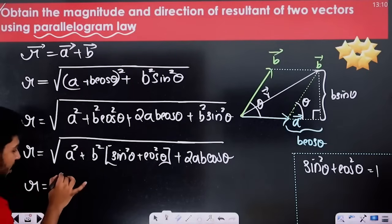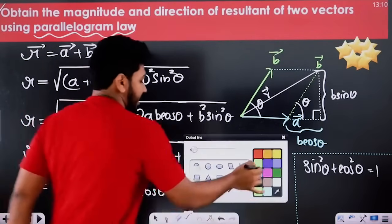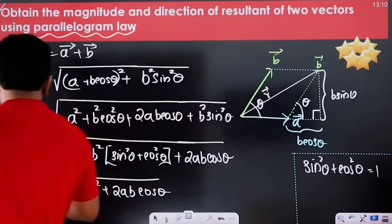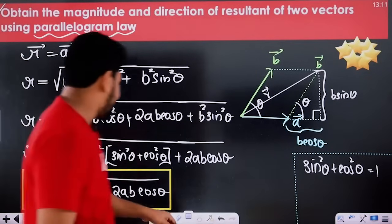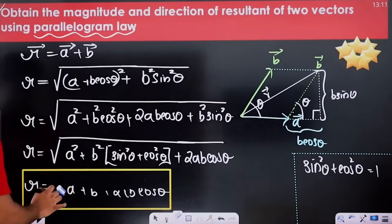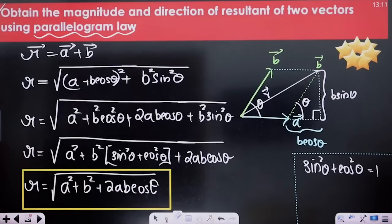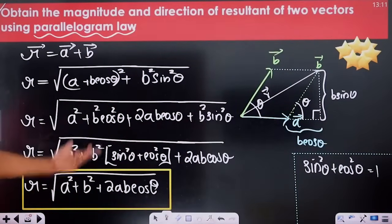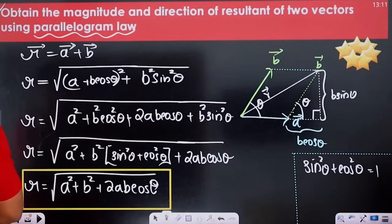So R is equal to root of A squared plus B squared plus 2AB cos theta. This is the derived formula for the magnitude of the resultant vector using the parallelogram law. The result gives the magnitude — for example, values like 3N, 5N, or 10N — not the direction.